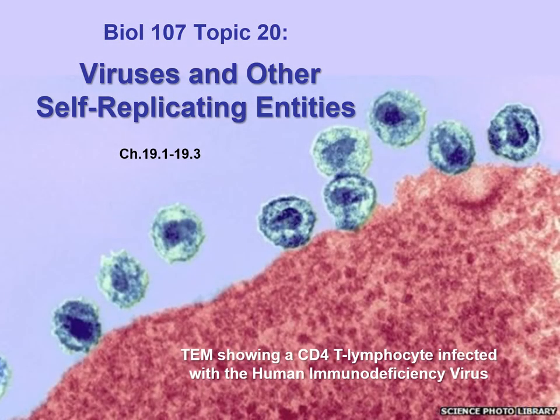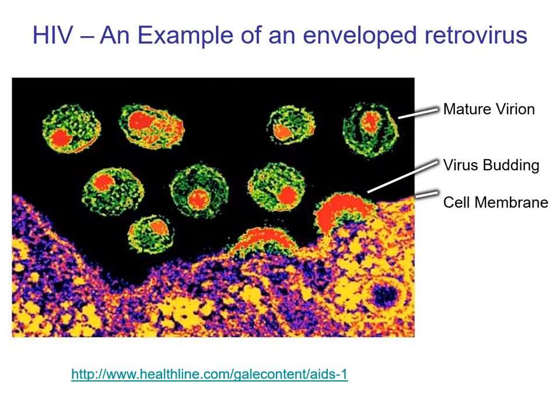This is part two of Biology 107, Topic 20: viruses and other self-replicating entities. Let's talk about HIV and AIDS. This is a very special virus that has gained a lot of press in the last few decades and is very important worldwide, so I want to talk about it as a special virus.